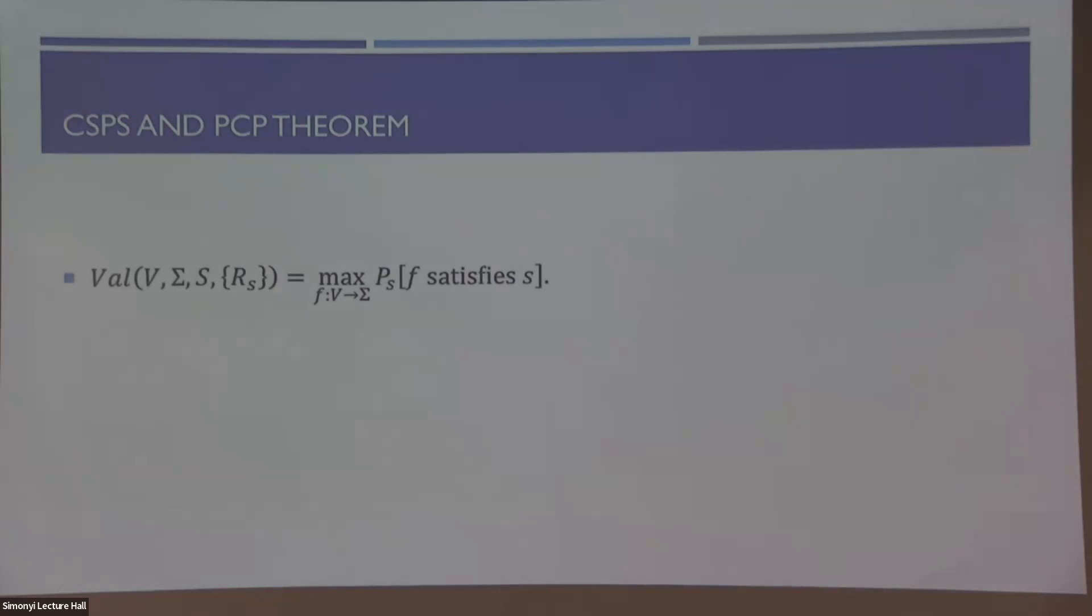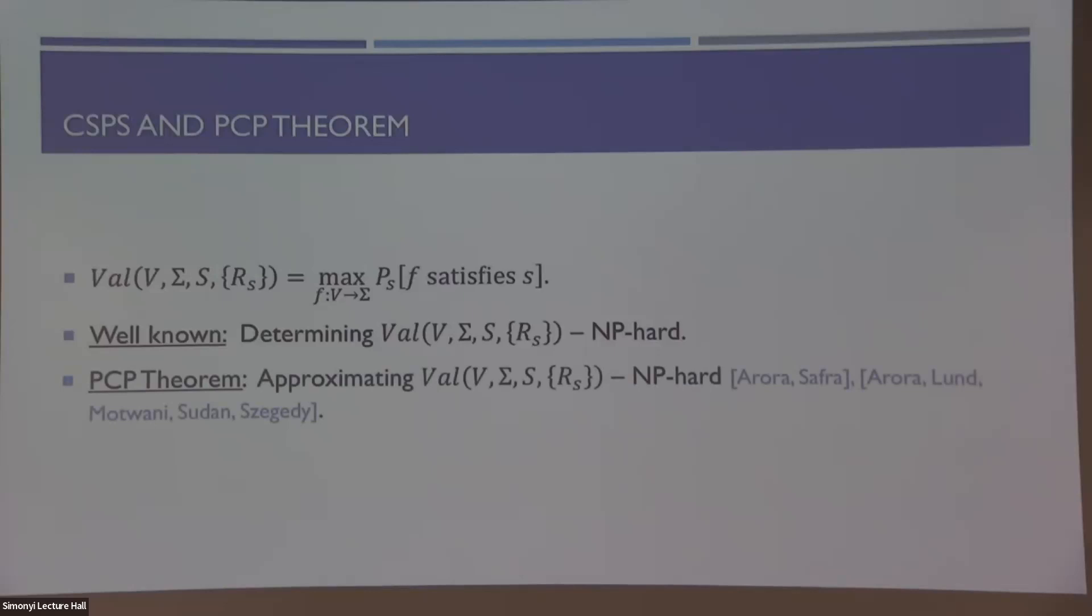We can also define the value of a CSP, which would just be the maximal number of constraints that we can satisfy with one assignment. I'm normalizing here between zero and one, so I'm dividing by the number of total constraints just for convenience. I think the first NP-hardness results are that CSPs are NP-hard or determining this value is NP-hard just because three coloring is NP-hard. However, and I'm sweeping a lot of details and technicalities under the rug, one can equivalently state what's called the PCP theorem as the following, that even trying to approximate this value up to some multiplicative constant is also NP-hard.